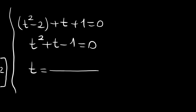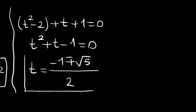This is very nice since this is a quadratic, and the quadratic formula will give us the results for t. We get t equals negative 1 plus or minus the square root of 1 squared minus 4 times 1 times negative 1, which is 5, all divided by 2. So t equals (-1 ± √5) / 2.